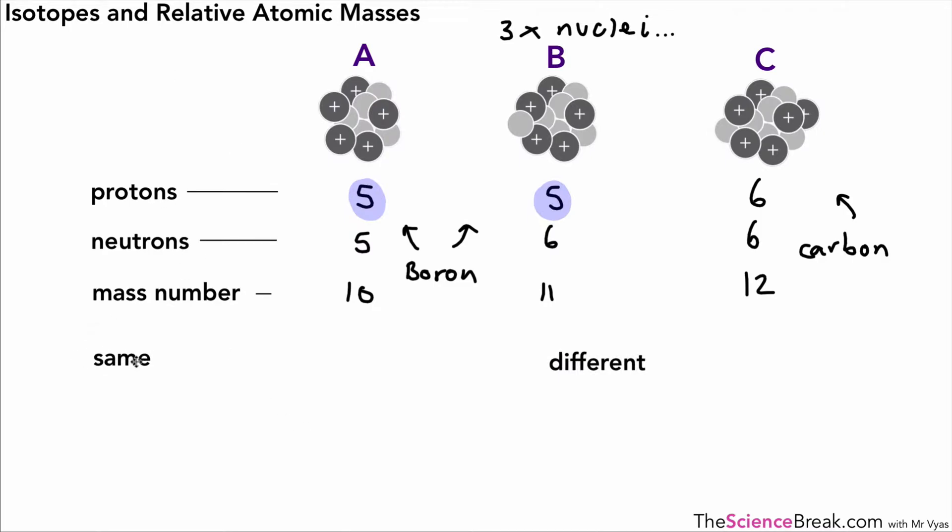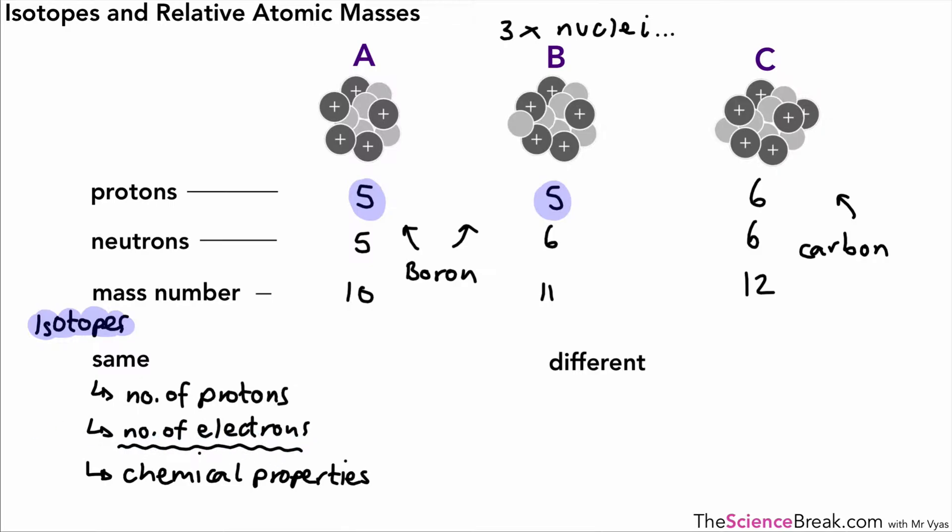Let's look at more detail about isotopes—what's the same and what's different. First, isotopes have the same number of protons and the same number of electrons. If we have five protons, we have five electrons in the atom. Something else that's the same is chemical properties—the kind of chemical reactions these isotopes take part in. That's because chemical reactions depend on the number of electrons, not neutrons.